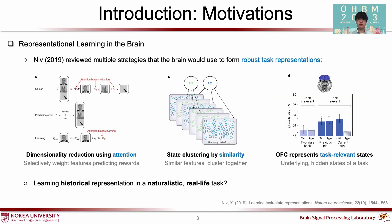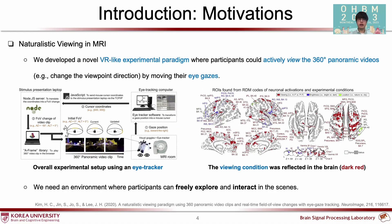NIT 2019 summarized neural mechanisms to construct robust task representations. However, most studies utilize artificial and controlled tasks, which may not fully reflect learning strategies in real life. A few years ago, we designed a novel VR-like paradigm in MRI using an eye tracker, but we used panoramic videos as stimuli, so interaction between participant and environment was limited. Therefore, we need a real-life task where participants can freely explore and interact in the scenes.